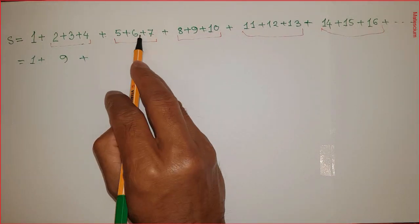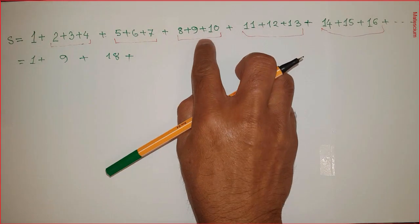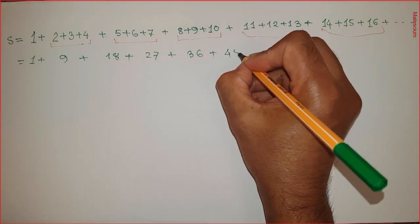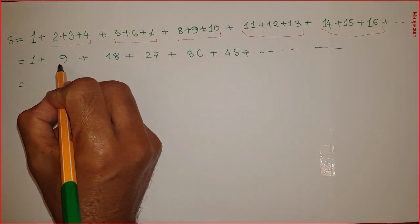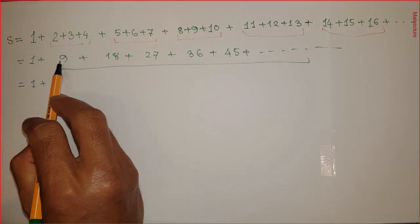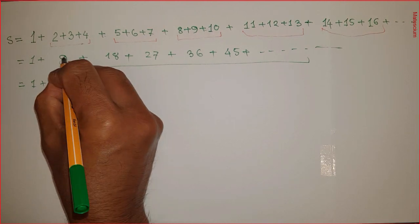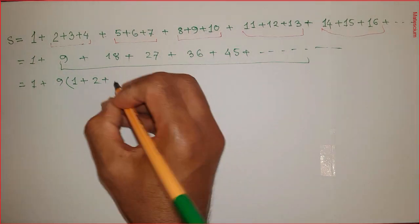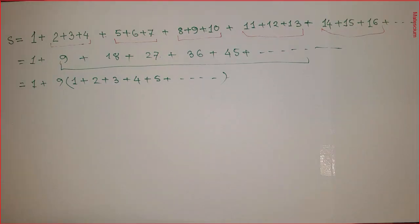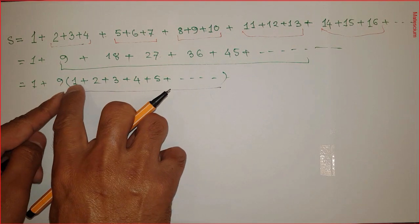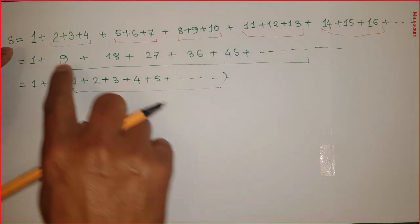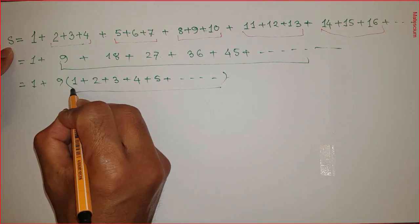The summation of 2, 3, and 4 is 9; the summation of 5, 6, 7 is 18; similarly, the next group is 27, then 36, then 45, and so on up to infinity. Now I keep the first digit alone and take 9 as a common factor from the rest. If I take 9 as common: 9 becomes 1, 18 becomes 2, 27 becomes 3, 36 becomes 4, 45 becomes 5, and so on. This means the bracketed part is 1 plus 2 plus 3 plus 4 plus 5 plus dot dot dot up to infinity, which is equal to S.